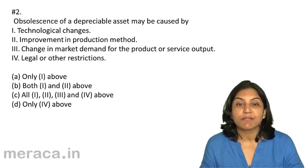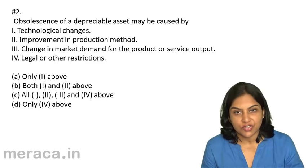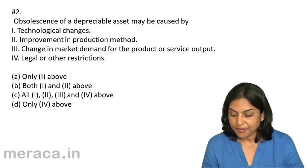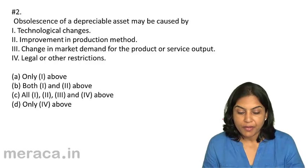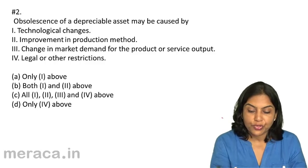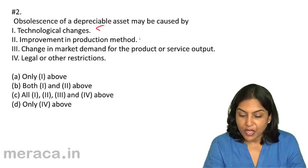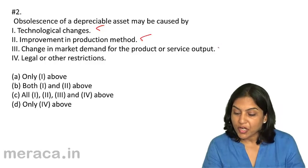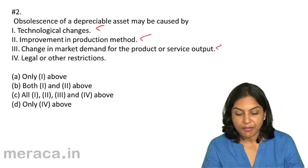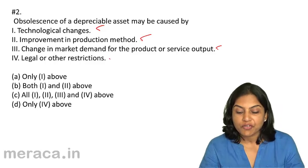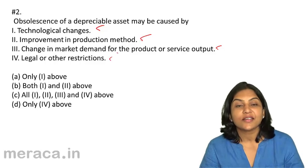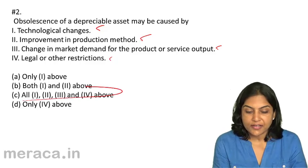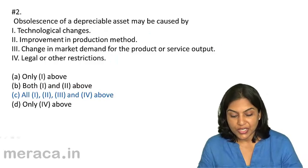Obsolescence may be caused by all of these reasons. It is possible that an asset becomes obsolete due to technology changes, because of innovation in the production method, because there is a change in market demand, or because of legal or other restrictions. Therefore, the correct answer should be 2c.